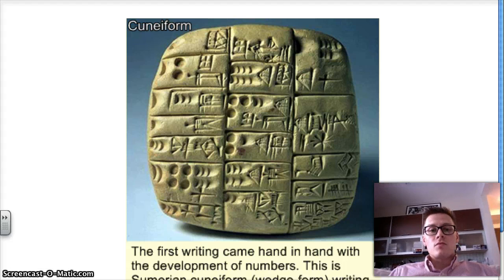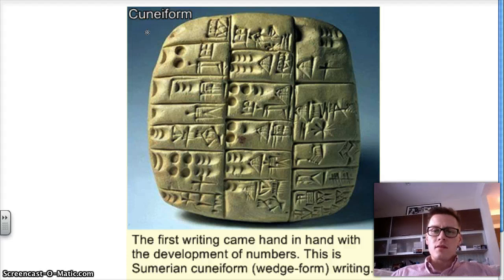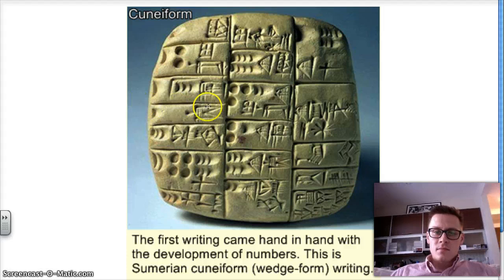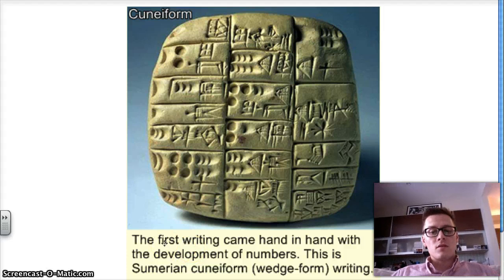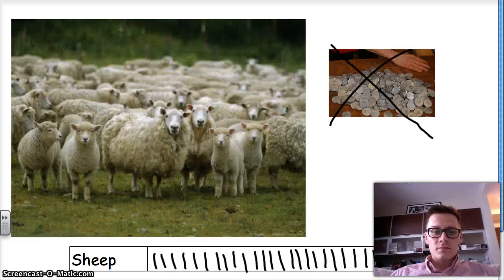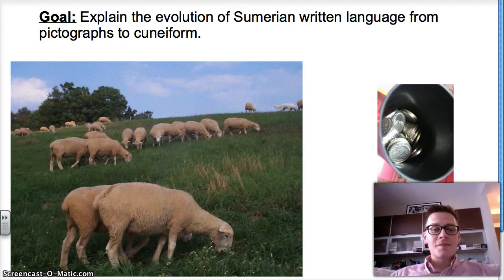And what does that lead to? Well, that leads to cuneiform. They start off with numbers, and then they start to spread out and add other things. They have their writing for numbers, and then they start writing for, let's say, sheep — they come up with a picture for sheep, pictures for everything, and then they put it on lines. And that is writing — that is the birth of writing. For all my math fans out there, the first writing came hand in hand with the development of numbers. This is Sumerian cuneiform wedge form writing. That is our lesson for today — the evolution and changing over time of Sumerian written language from pictographs to cuneiform. I hope it's been edifying. This has been World History with Mr. McCall. Take care.